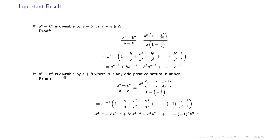Before we proceed to solve the problems, I would like to introduce an important result. The first result is: aⁿ minus bⁿ is divisible by (a minus b) for any n in the natural number set. We divide aⁿ minus bⁿ by (a minus b) and write it in the form of a series with first term 1 and common ratio b/a.